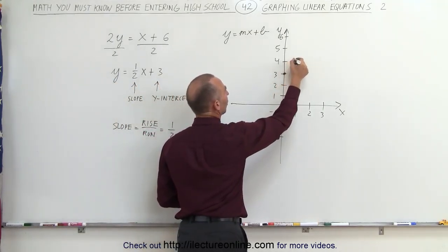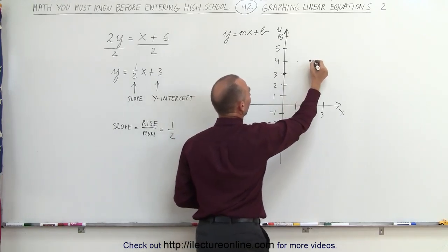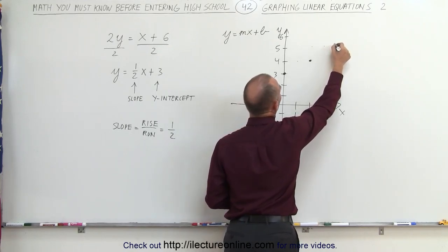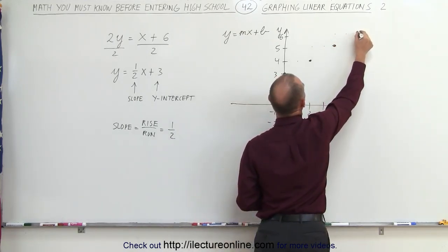I go up 1, over 2, 1, 2, and there's my new point. From that point, I can go up 1 and over 2, and there's my new point. From that point, I go up 1 and over 2, and there's my new point.